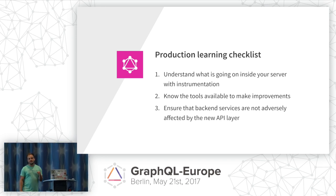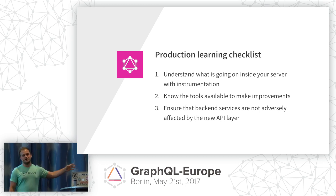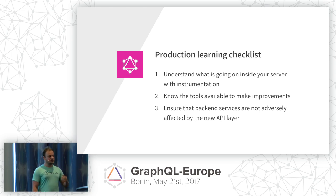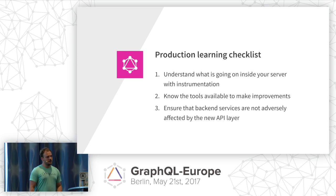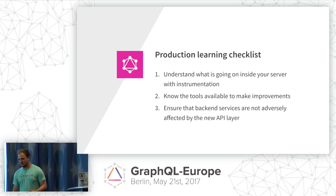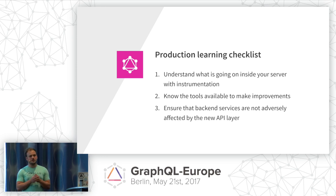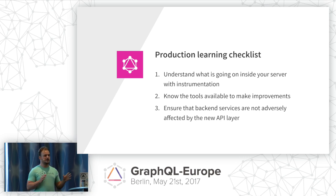Here's a checklist for what you might want to do to reassure yourself that putting GraphQL in production is going to work. The number one thing when thinking about production or optimization is to get the data first. Don't worry about optimizing stuff ahead of time — just put the instrumentation in there, figure out what's going on, and test it out. Then once you find the problems, you need to know the tools available to make improvements, and make sure the back-end services and databases are not having negative impacts from running this new API.